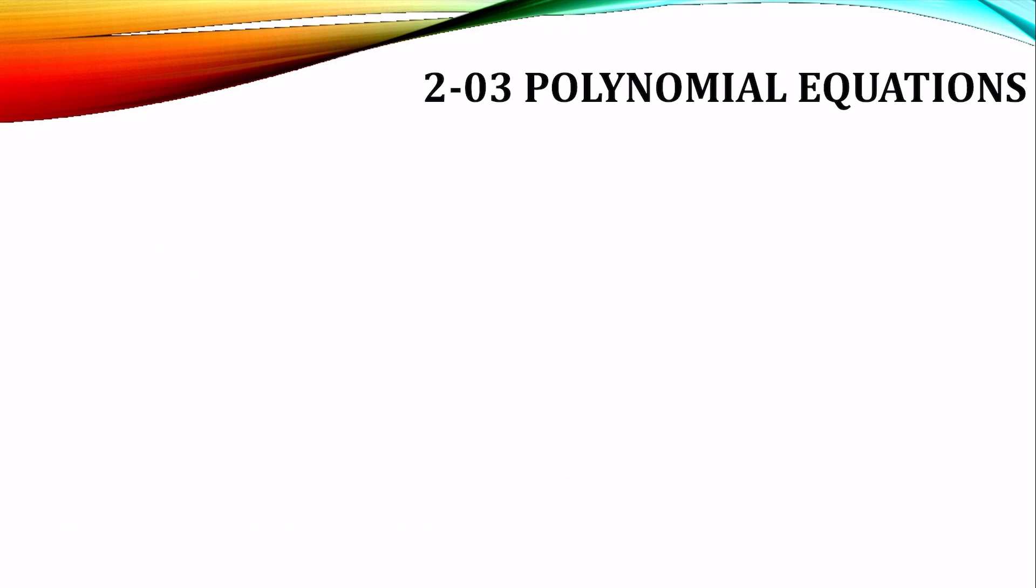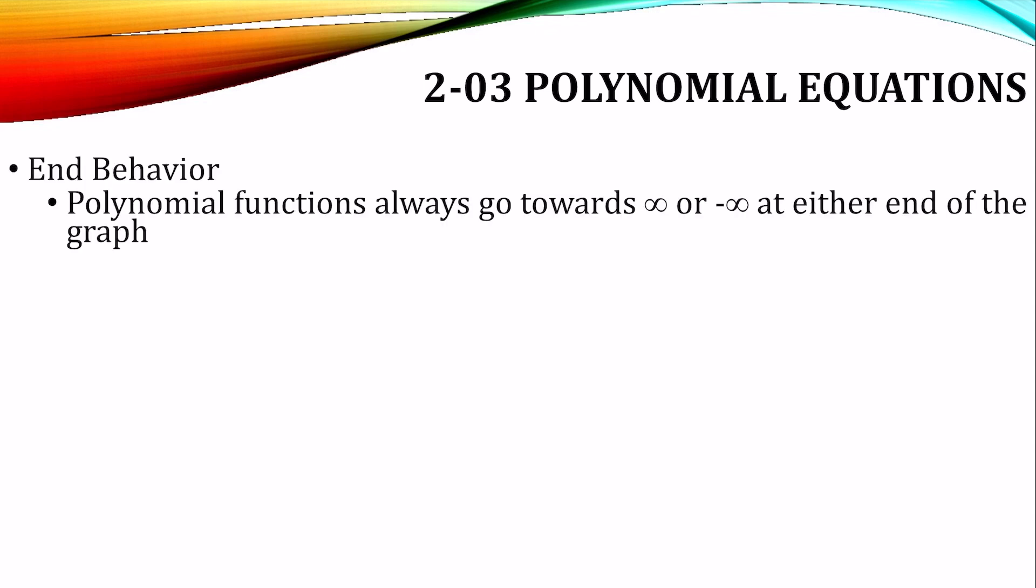If we're going to graph polynomial functions, you'll look at the end behavior. They always go up or down, towards positive infinity or down towards negative infinity at either end of the graph. And they can all be classified in four ways.